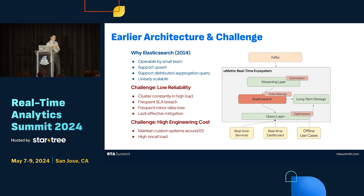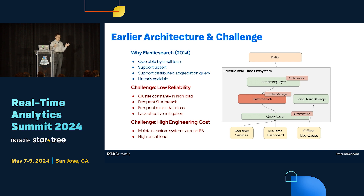Why did we want to do that? We started with Elasticsearch very early in the Uber days, back in 2014. At that time, the volume of data was relatively small compared to today. It came with several off-the-shelf functionalities like upsert, aggregation, and it was scalable. However, over the years as data grew, the metric platform engineers saw challenges on the reliability side and engineering cost side. They tried all kinds of optimizations but due to the nature of this technology and lacking enough expertise to change Elasticsearch itself, building around it had its own limits.